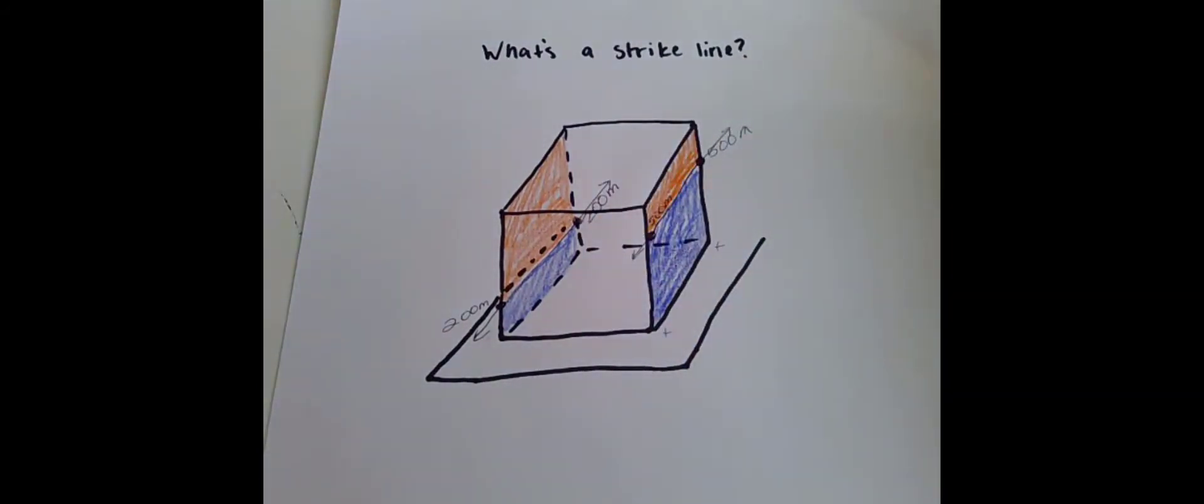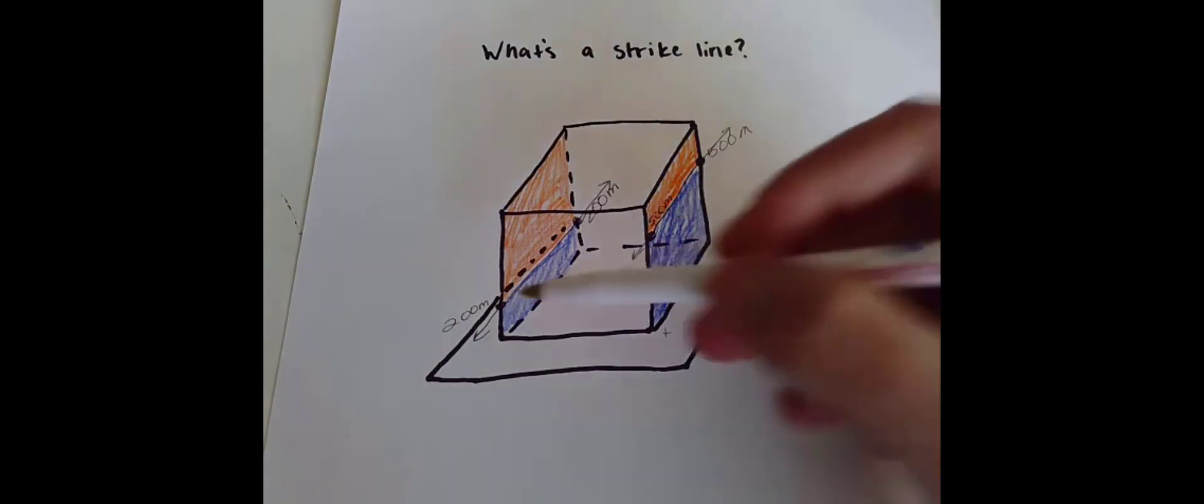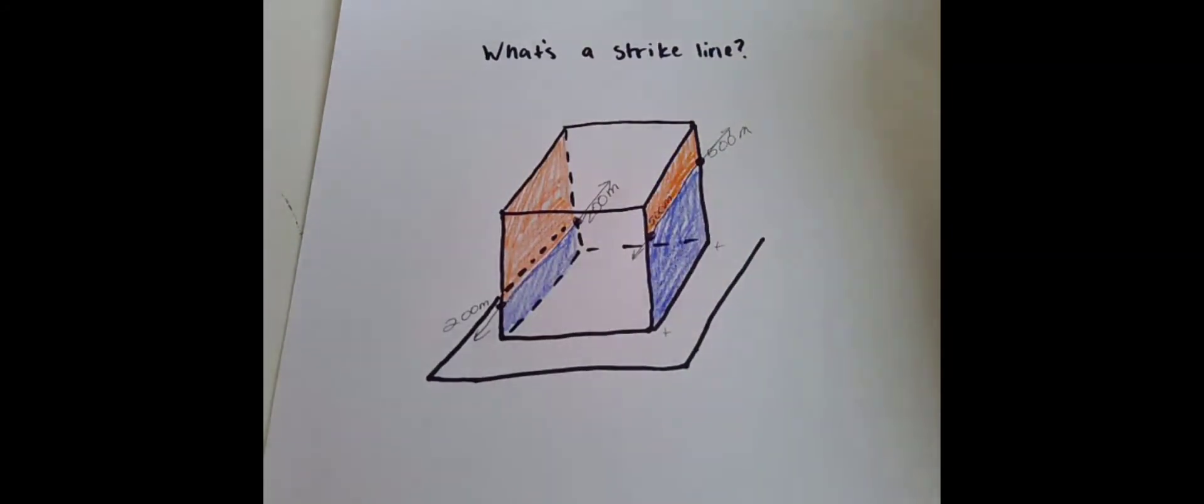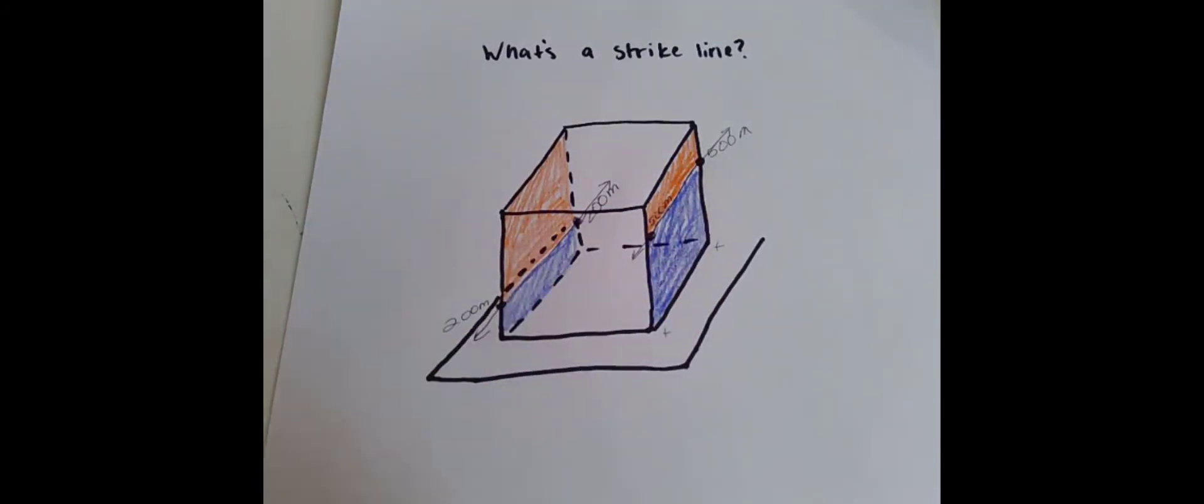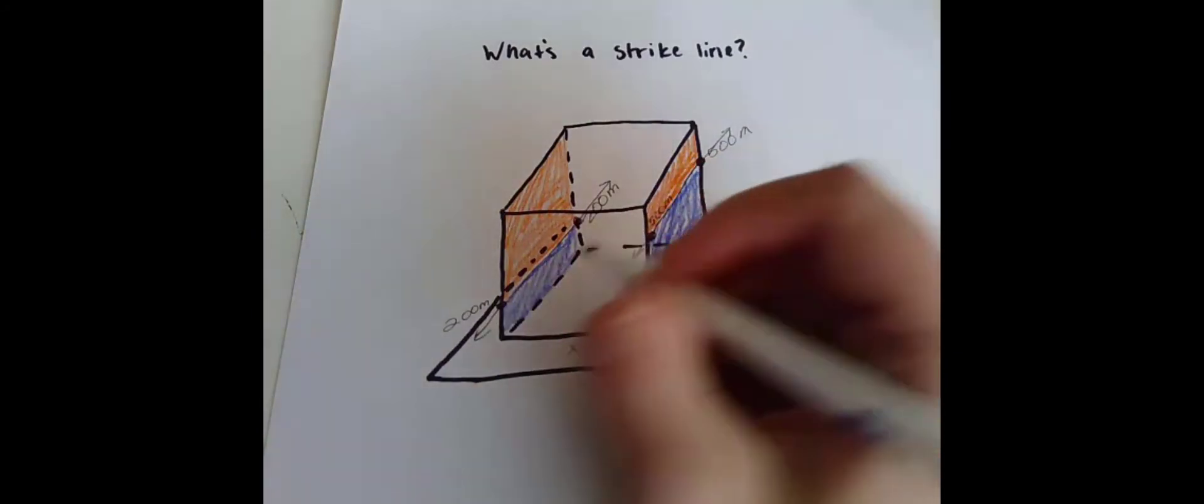Now here's where the concept of apparent dip can come in. If you're looking at the contacts between this unit on this side or this side, it's going to look like that unit is dipping zero degrees. But the reason for that is that at this point you are looking parallel to dip. You're looking perpendicular to strike and we need to be able to look and see dip just to help us visualize what's going on here with these units. So let's say you get back in your car, drive back around and you park here. What you're going to see now is the true dip.